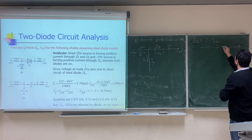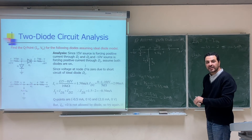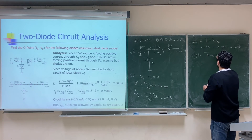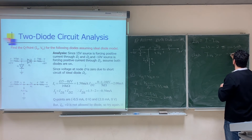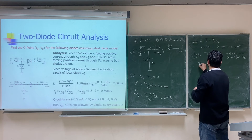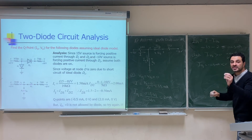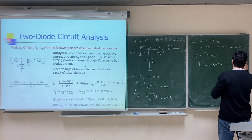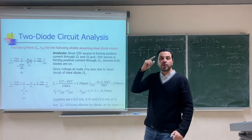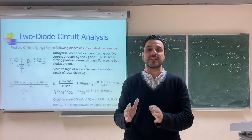Step three — Check. We assumed both diodes are on, so we check I ≥ 0 for each. I_D2 = 2mA > 0, so the assumption is correct for D2. But I_D1 = −0.5mA < 0, which means the assumption is wrong for D1. Since the assumption is wrong for even one diode, the entire solution is invalid.